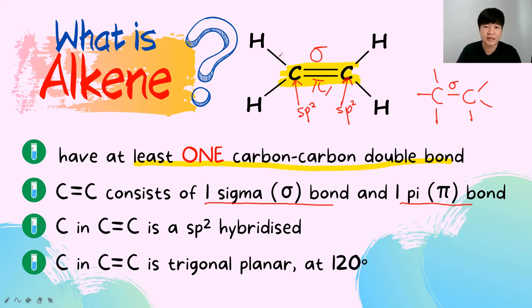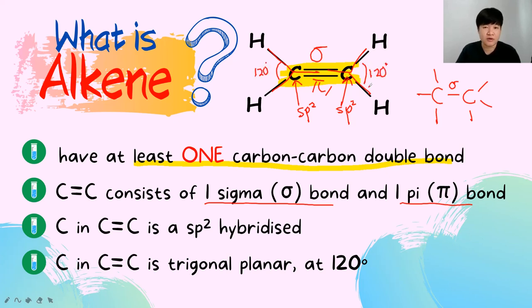You can see the trigonal planar shape — that is the trigonal shape you learned in semester 1. This trigonal shape gives a bond angle of 120 degrees. This is how a carbon-carbon double bond should look, with sp2 hybridization giving rise to a trigonal planar shape with a bond angle of 120 degrees.